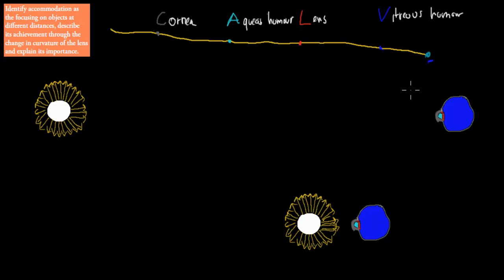In this video we're going to talk about something called accommodation. The dot point says to identify accommodation as focusing on objects at different distances, and also describe its achievement through the change in the curvature of the lens. We have to talk about how accommodation actually happens, and we have to explain its importance — why accommodation is actually important.